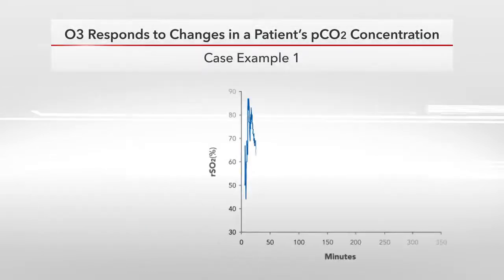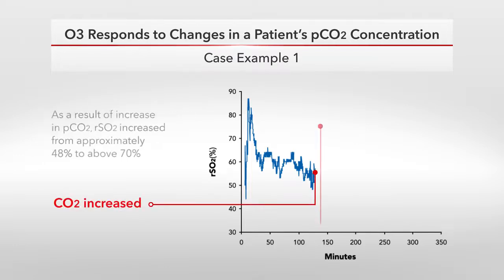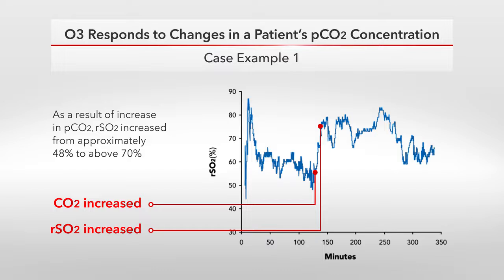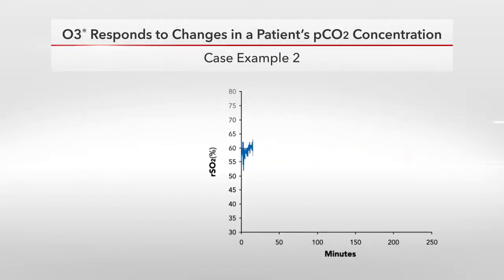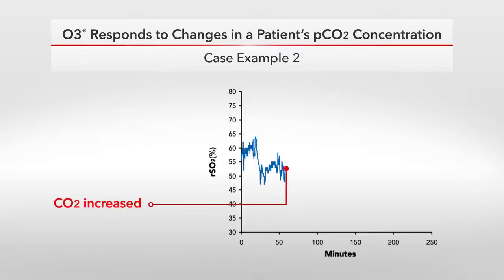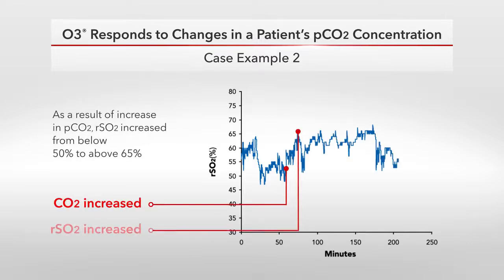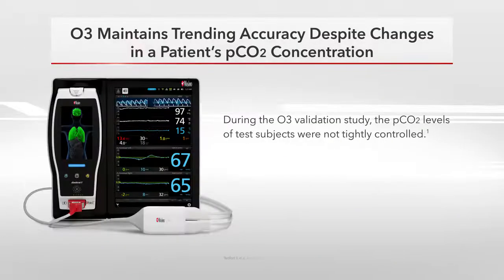In this clinical case, PCO2 was increased at approximately 120 minutes. As a result of the increase in PCO2, RSO2 increased from approximately 48% to above 70%. In a second clinical case, PCO2 was increased at approximately 60 minutes. As a result of the increase in CO2, RSO2 increased from below 50% to above 65%.